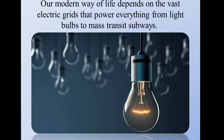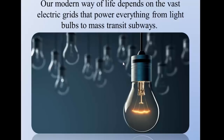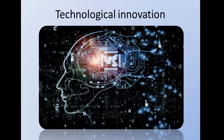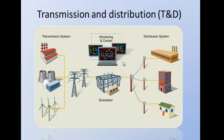We can see that the modern world depends on electric grids that power everything from lighting to mass transit subways. Despite tremendous strides in technological innovation, these existing grids are largely built on aging design — essentially a decentralized grid architecture fed by large power generation plants in remote locations, connected to customer sites through a complex system of transmission and distribution, called T&D.